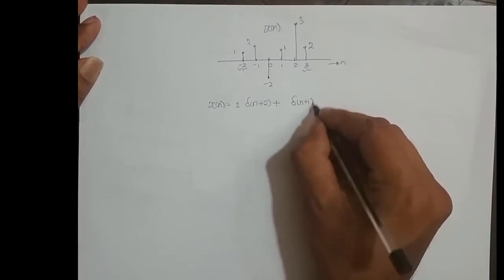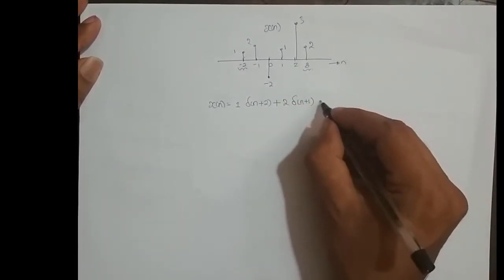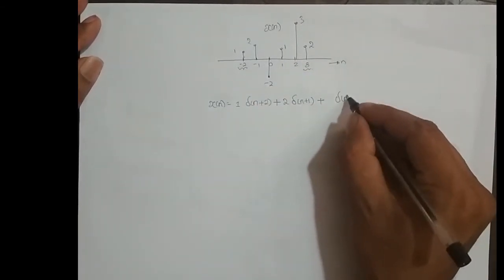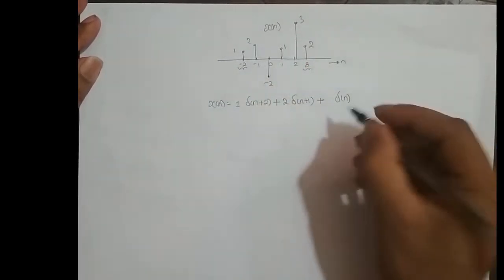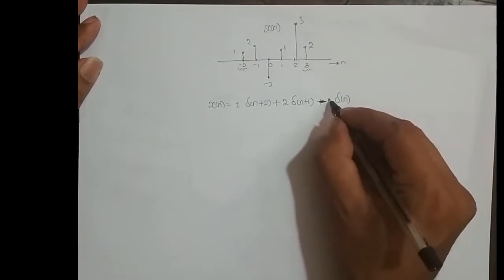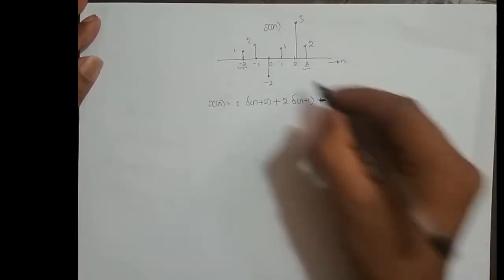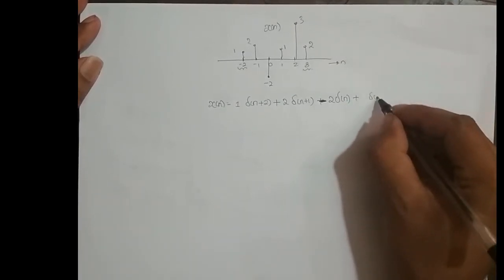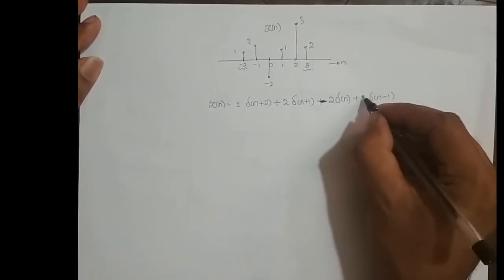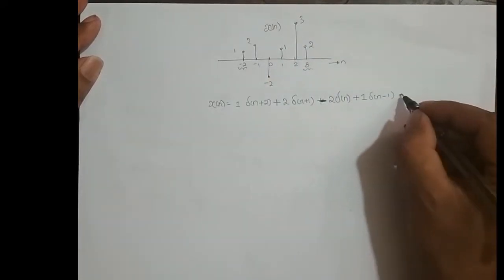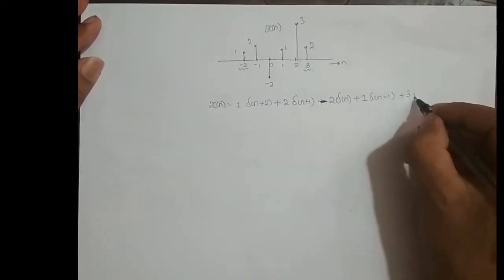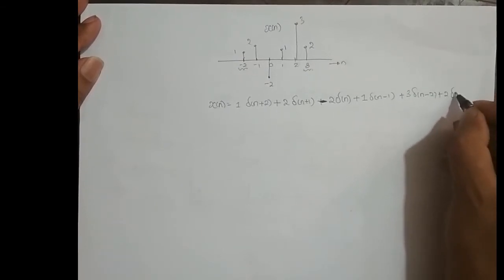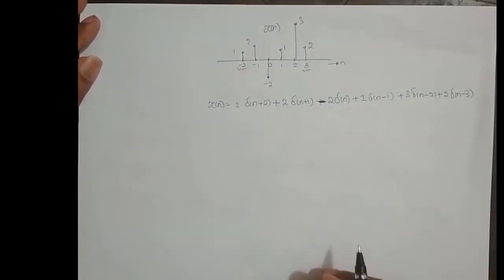This signal is added with delta of n plus 1, amplitude scaled by a factor of 2, plus delta of n with no shifting and amplitude scaled by minus 2, plus delta of n minus 1 with amplitude 1, plus 3 times delta of n minus 2, plus 2 times delta of n minus 3.